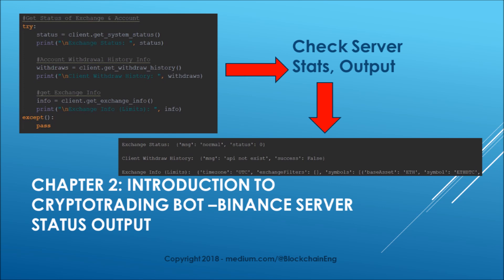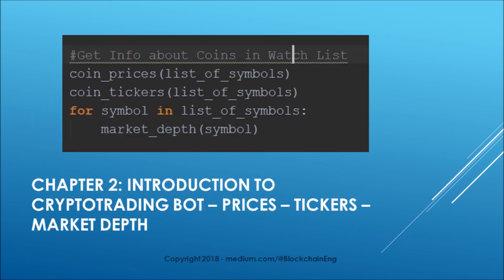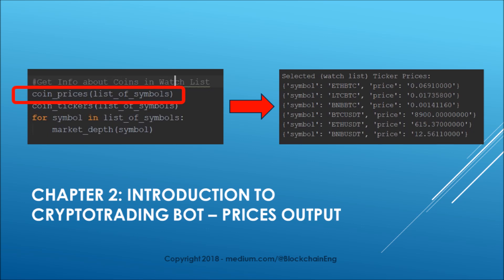On the right side we get the list of codes which test the Binance server to confirm it's communicating correctly — getting withdrawal history, system status, and exchange info. These are done within a try/except block. On this screen you can see the exchange status, withdrawal history, and various limits in the output from rooiball.py. This is just to make sure everything is working. For the coin prices output, we see the latest price for our watchlist of cryptocurrency pairs, such as ETH/BTC and BTC/USDT around $8,900.